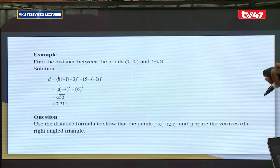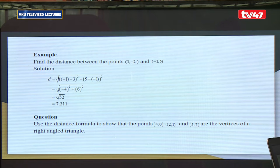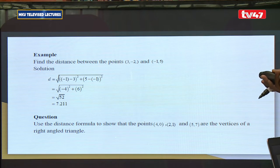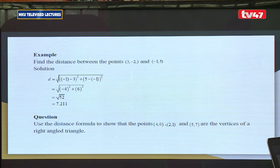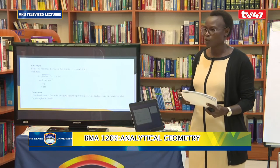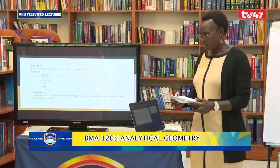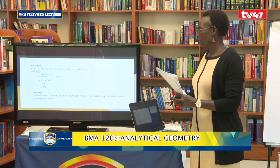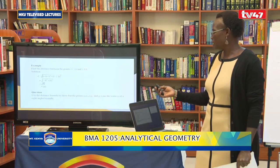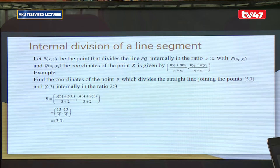If the question asks you to use the distance formula to show that the points (4, 0), (2, 1), and (5, 7) are the vertices of a right-angled triangle, the idea is the same. You find the distance between each pair of points and then confirm that those distances conform to Pythagoras' theorem, which confirms they are vertices of a right-angled triangle.